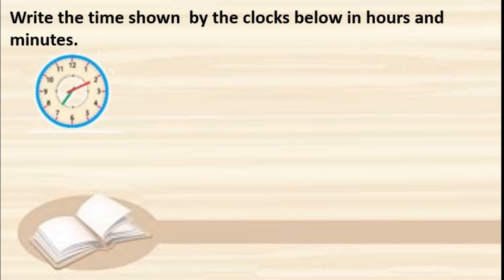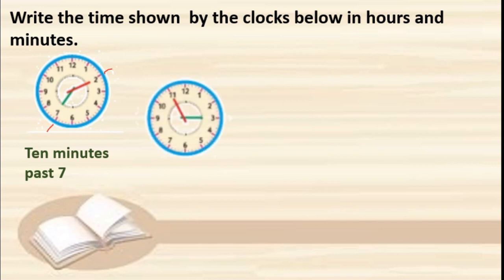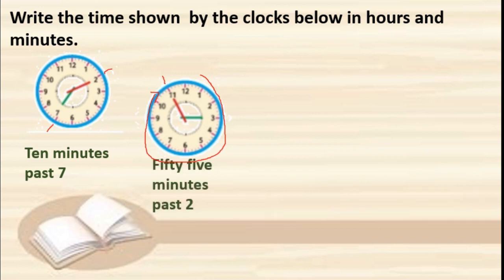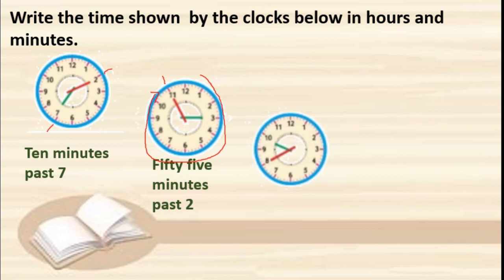Next clock: the minute hand shows 10 minutes and the hour hand is indicating 7, so it is 10 minutes past seven. Next: the minute hand is on 55 minutes. We are going in the clockwise direction. The hour hand is between 2 and 3, very near to 3 — but the time is still 55 minutes past two. Following clock: 40 minutes past nine, as the hour hand is between 9 and 10.